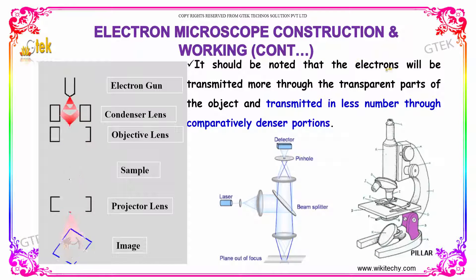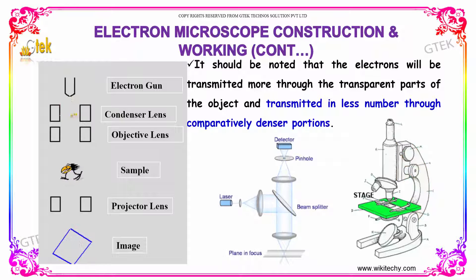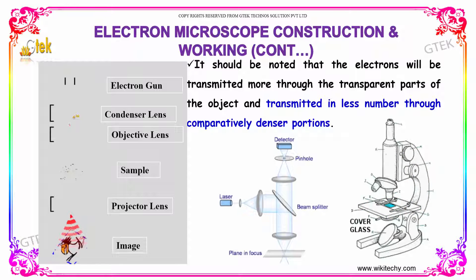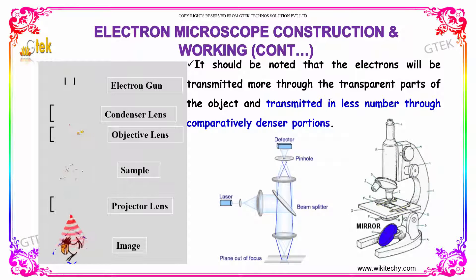It should be noted that the electrons will be transmitted more through the thinner part of the object and transmitted in fewer numbers through comparatively denser portions.